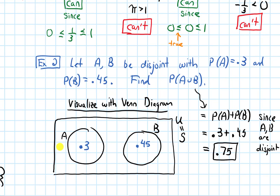In the next video, one of the things we will do is talk about how to find the probability of a union when the two events are not disjoint, which will be similar to a formula we've seen before for the sizes of sets.